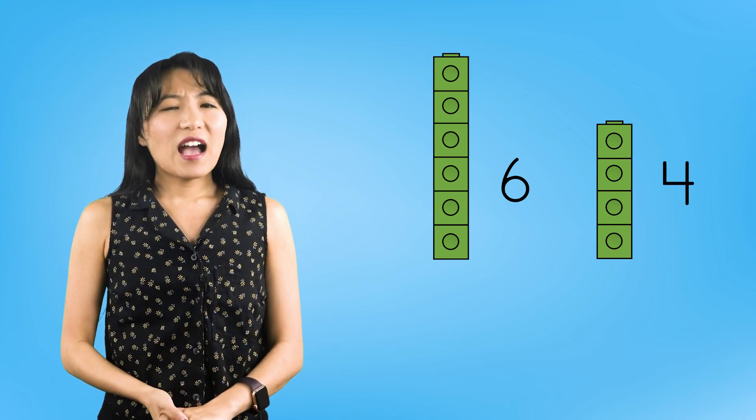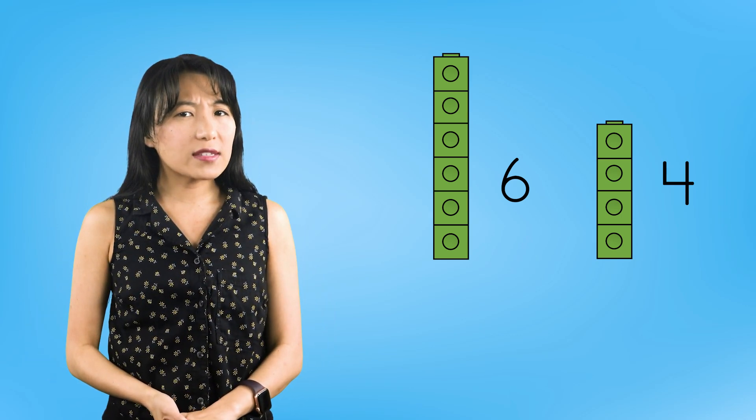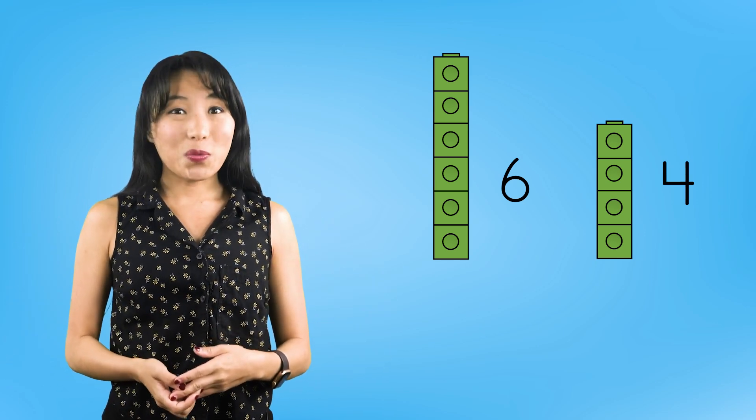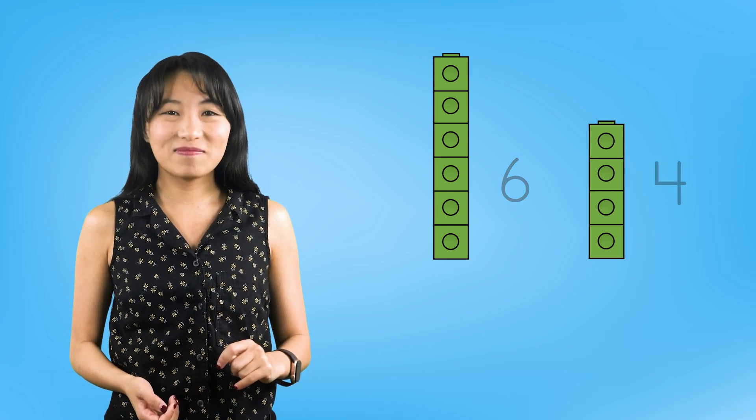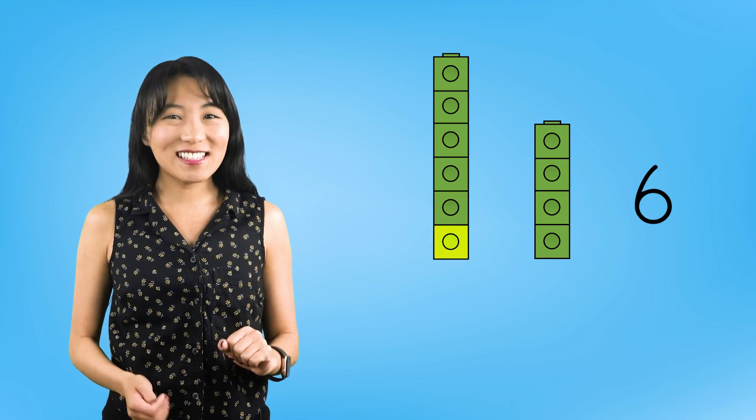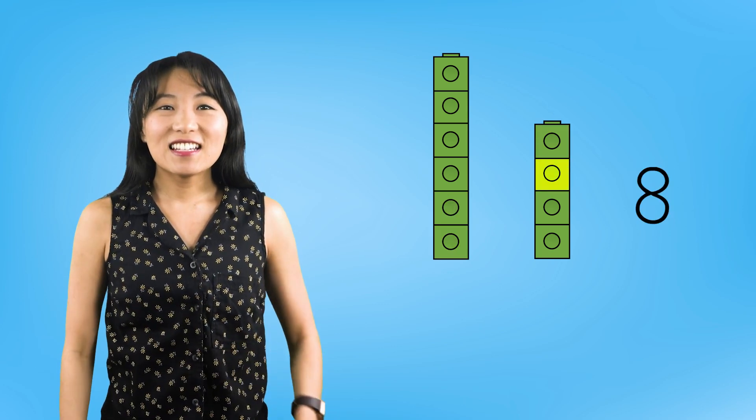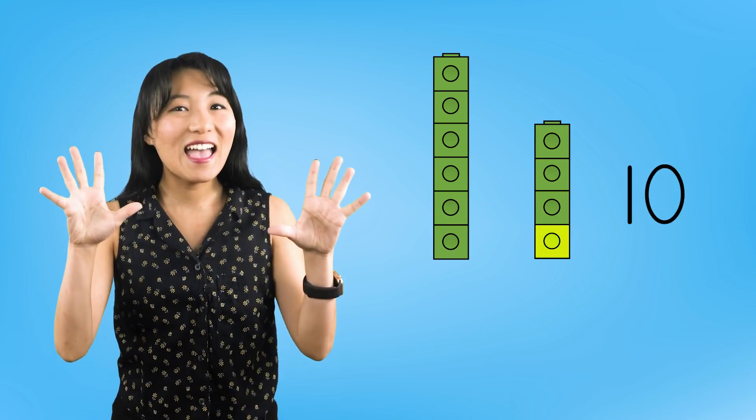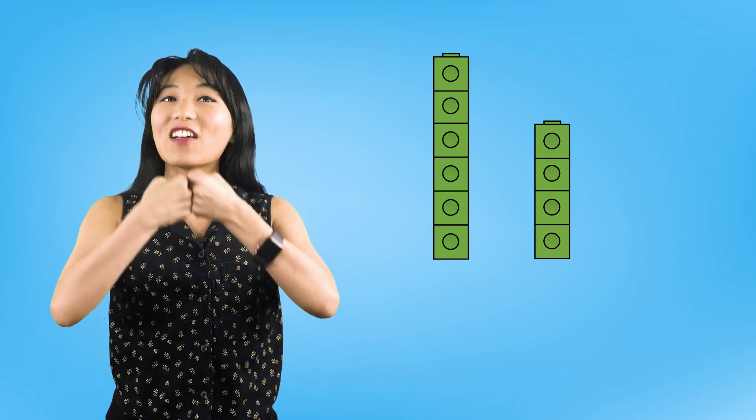But how do we know that 6 and 4 really make 10? We can count them all together and double check. 1, 2, 3, 4, 5, 6, 7, 8, 9, 10! When we count the parts together, we get the whole.